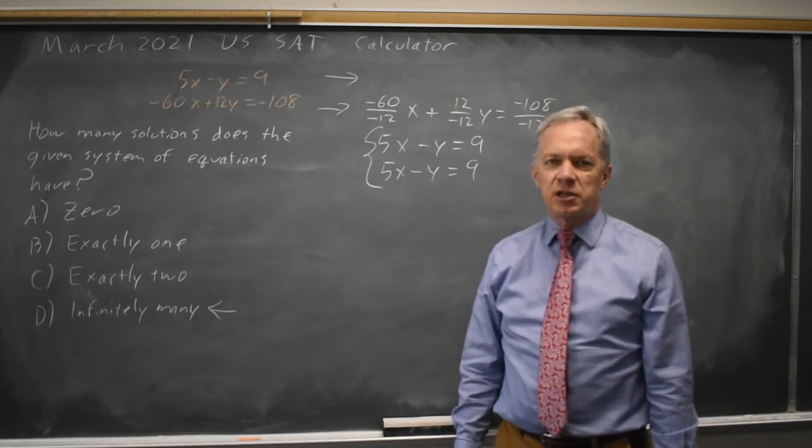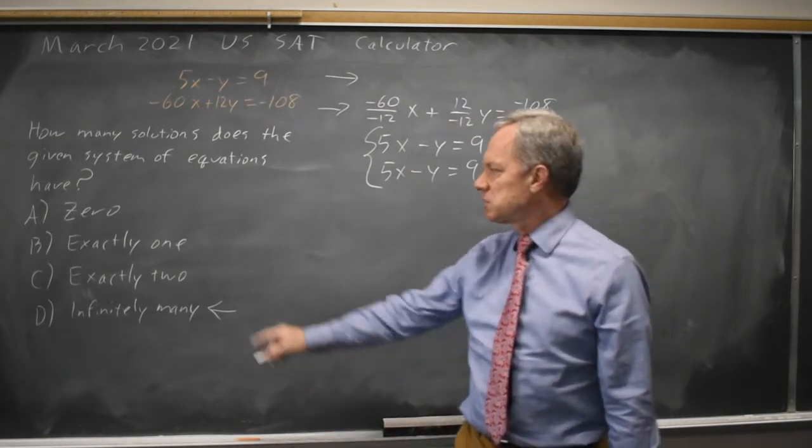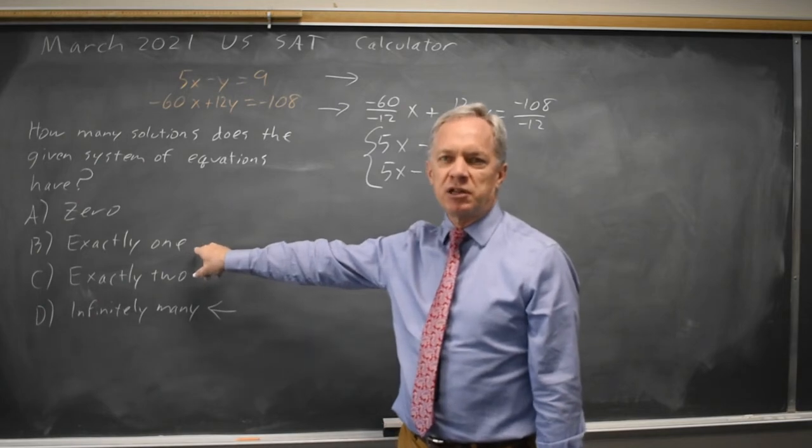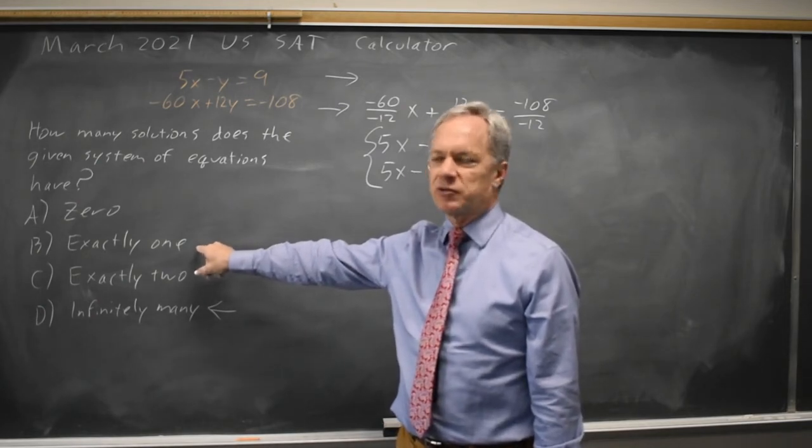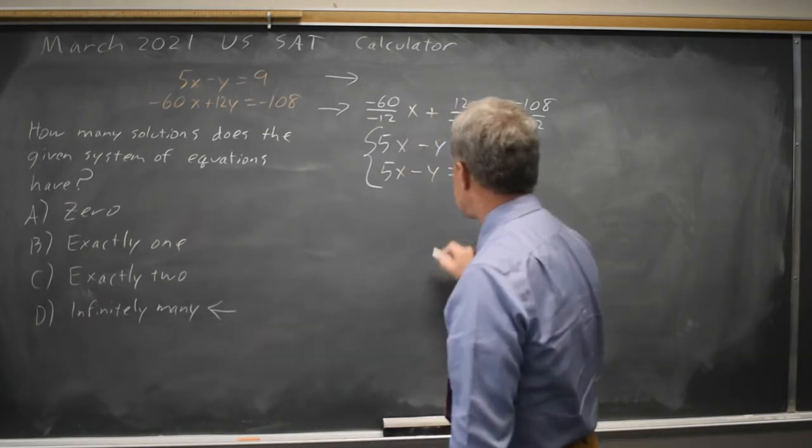If you have two linear equations with different slopes in the plane, they always have exactly one solution. If you have two linear equations with the same slope with different y-intercepts, they have zero solutions.